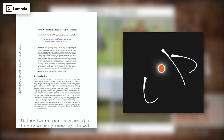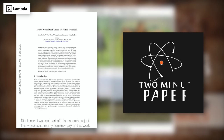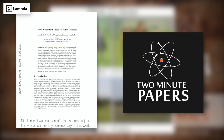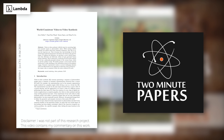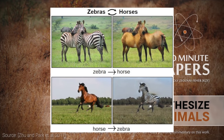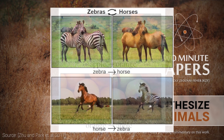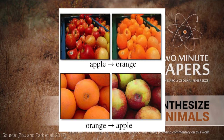Dear Fellow Scholars, this is Two Minute Papers with Dr. Károly Zsolnai-Fehér. Approximately three years ago, a magical, learning-based algorithm appeared that was capable of translating a photorealistic image of a zebra into a horse, or the other way around, could transform apples into oranges, and more.